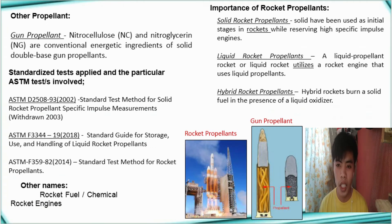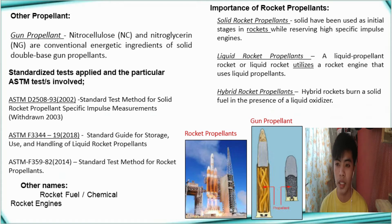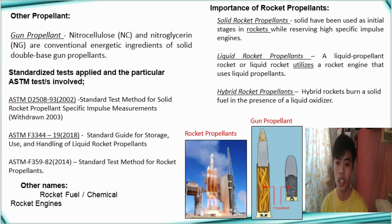Processes for making gun and rocket propellants differ in at least one important respect, namely in the number and size of grains produced. Gun propellant processes are designed to produce a multitude of relatively small grains. Procedures differ somewhat according to whether the product is a single, double, or triple-based propellant.